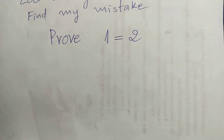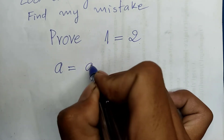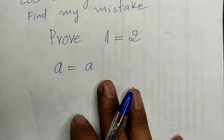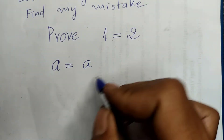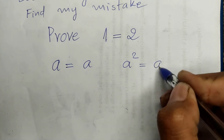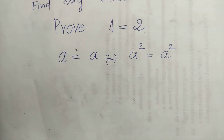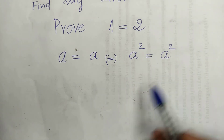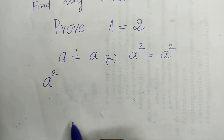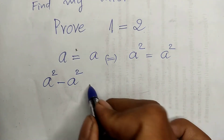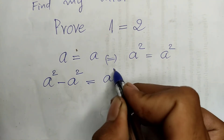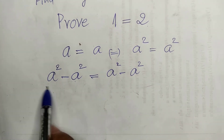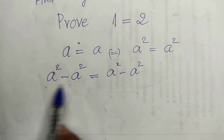Now, we have a is equal to a. All the values of a, and this is the reverse side of this equation: a squared. So we get a squared is equal to a squared. Now I subtract both sides of this equation with a squared, so we get a squared minus a squared.